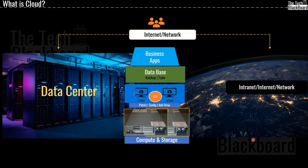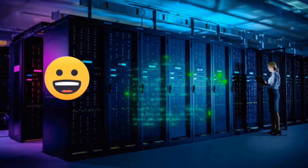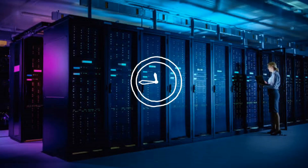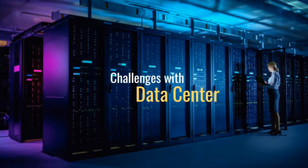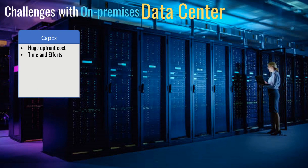So this is how a data center is built — an oversimplified example kept this way for a beginner course. So life was good with data centers: companies could build big data centers, install all the components they need, and wait for the business to flourish. But that's not quite true. The biggest problem with on-premises data centers is cost — CAPEX, or capital expenditure. CAPEX is the upfront, one-time massive expenditure a company has to incur to build a data center. It will take a lot of money, time, and effort to set up.